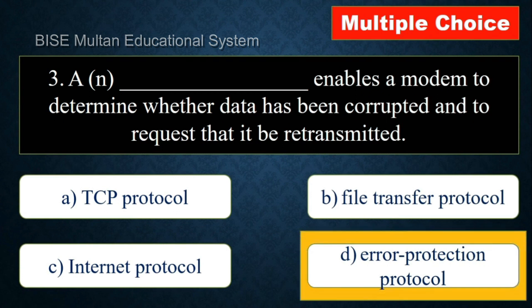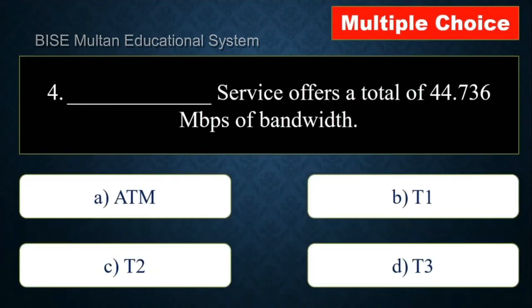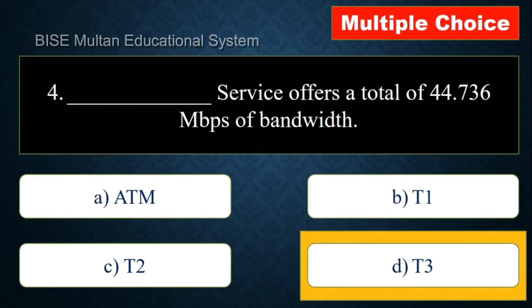The answer is error protection protocol. Question number 4: Dash service offers a total of 44.736 Mbps of bandwidth. The answer is T3.